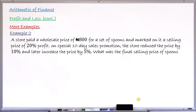Example number 2: A store paid a wholesale price of 800 Naira for a set of spoons and marked a selling price at 20% profit. During a special 10-day sales promotion period, the store reduced the price by 10%. After the 10 days expired, they increased the price by 5%. The question asks: what was the final selling price of the spoons?